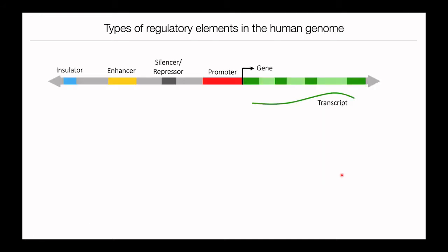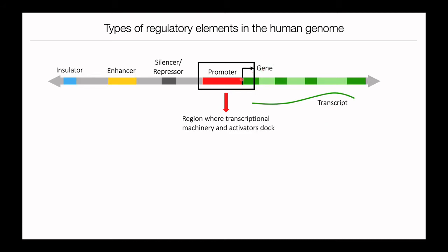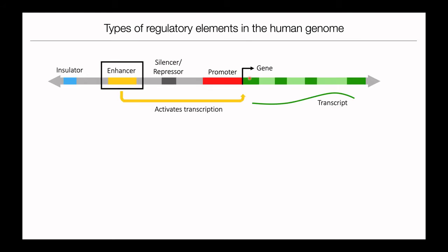Here I illustrate several kinds of regulatory elements. Promoters are the region right next to the 5' end of the gene — the transcription start site, or TSS. My slides are color-coded: promoters are in red. This is where RNA Polymerase 2 and other polymerases bind and start transcription of a gene. We also have enhancers, color-coded in yellow, which are far away from the TSS and help promoters activate gene transcription.